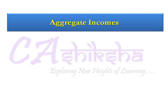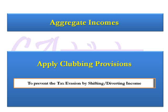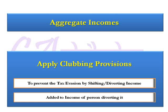Once income is calculated under the different heads, these incomes are aggregated because tax rates are applied on total income. After that, we apply clubbing provisions. Tax in India is progressive, meaning tax rates change with the level of income — there is a basic exemption, then a lower tax rate, and then higher tax rates for higher incomes. Because of this, some taxpayers may divert part of their income to other family members to benefit from lower tax rates. To prevent such practices, there are clubbing provisions in the income tax law. As per these provisions, if a person diverts income to someone else, that income is still taxable in the hands of the person diverting it, and clubbed incomes are added back to that person's total income.